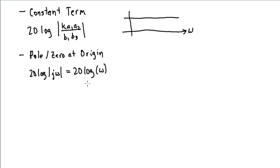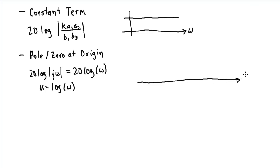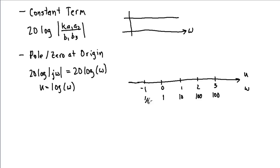This is a non-linear term. It's simpler to plot this as a function of u equal to log of omega, and lay out a u-axis. We'll have zero, one, two, three, and the corresponding omega axis. At u=0, omega is one — log of one is zero. At u=1, omega is ten. At u=2, omega is one hundred, or ten squared. At u=3, omega is one thousand, or ten cubed. Going negative: u=-1 corresponds to one tenth, and u=-2 corresponds to one hundredth.